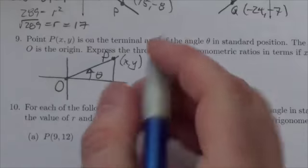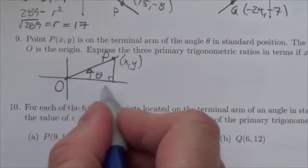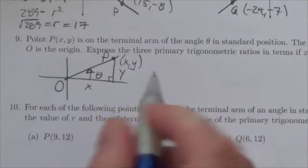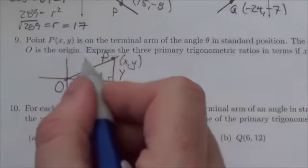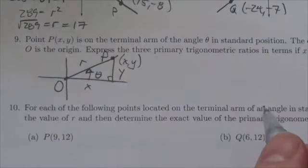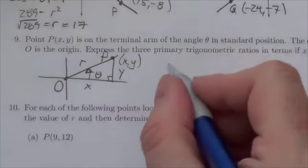And so what that means is this distance here would be x. This distance here would be y. I mean, that's what the point is, the coordinates are saying. And then the question also tells us that this is r, the distance from the origin to point P.